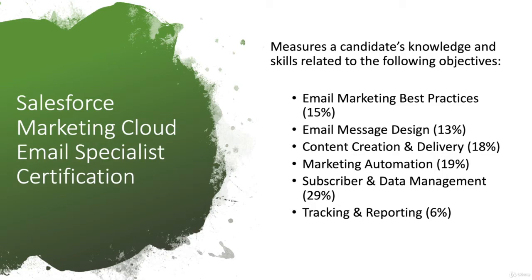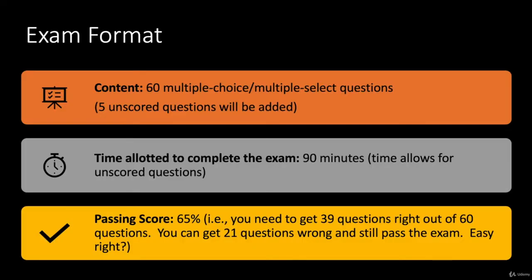Let's see what the exam format is. In this certification you would get 60 multiple choice or multiple select questions. In addition, there are five unscored questions added in, so once you start the exam you will see 65 questions total. The additional five questions — even if you get them wrong — won't be added to your score.